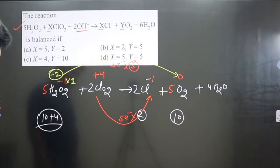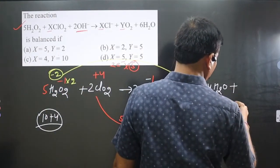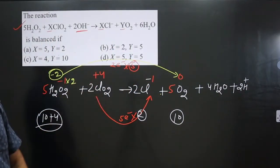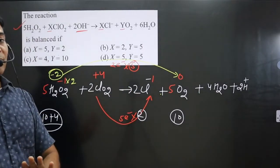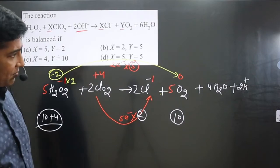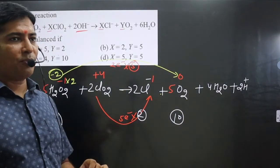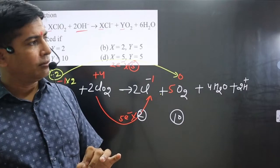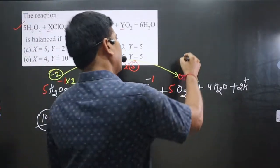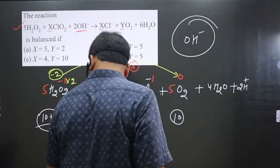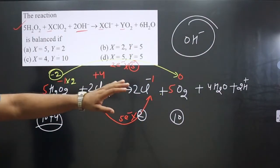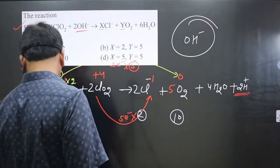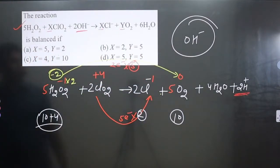To balance hydrogen, we attach 2H⁺ ions. Now both sides have 10 hydrogen atoms, so the equation is balanced in acidic medium. To convert to basic medium, we add OH⁻ ions equal to the number of H⁺ ions present in the equation — there are 2H⁺ ions, so we add 2OH⁻ on both sides.